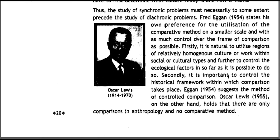Egan again states his preference for the utilization of the comparative method on a smaller scale and with as much control over the frame of comparison as possible. Firstly, it is natural to utilize regions of relatively homogeneous culture or work within social or cultural types, and further to control the ecological factors as far as possible. Secondly, it is important to control the historical framework within which comparison takes place. Egan suggests the method of controlled comparison. Oscar Lewis, on the other hand, holds that there are only comparisons in anthropology and no comparative method.